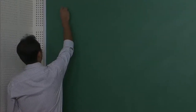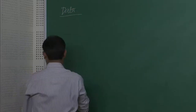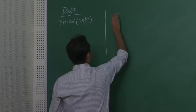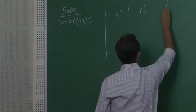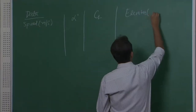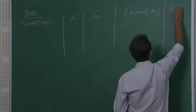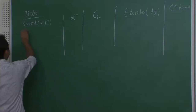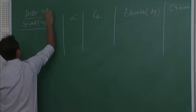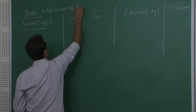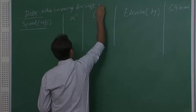In a flight test, the following data were given while trimming the airplane at different speeds. Data were given for speed in meters per second, angle of attack, lift coefficient, elevator deflection in degrees, and CG location. This is data while trimming your aircraft at different speeds.